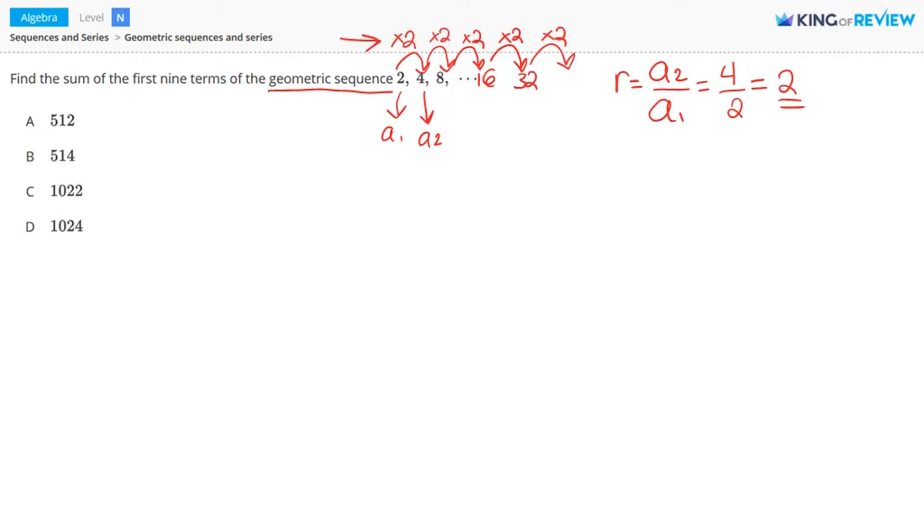Now you don't have to only choose a2 and a1 to calculate this common ratio. You can choose any term, let's pick a3, but you have to compare it with the previous term. So if we pick a3, we have to compare it with a2. This one here is a3, this is the third term. The third term is 8, and the second term is 4. So 8 divided by 4 equals 2. So we're getting a common ratio of 2. That's how these numbers relate in this geometric sequence.